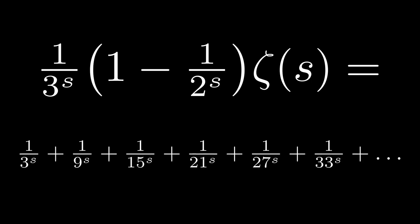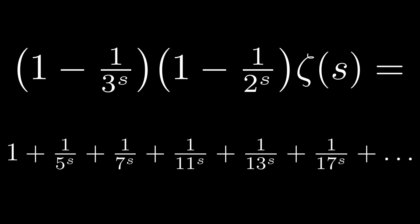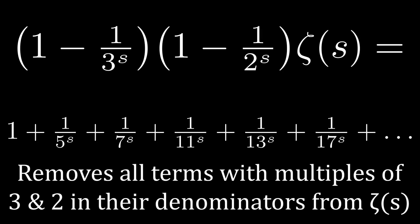From here, we'll do the same thing as before and subtract this sum from the previous one. In other words, we'll remove all these terms containing non-even multiples of 3 from the sum 1 minus 1 over 2 to the s times ζ of s. We can write this as 1 minus 1 over 3 to the s all times 1 minus 1 over 2 to the s all times ζ of s.